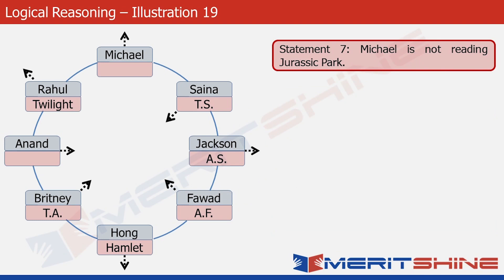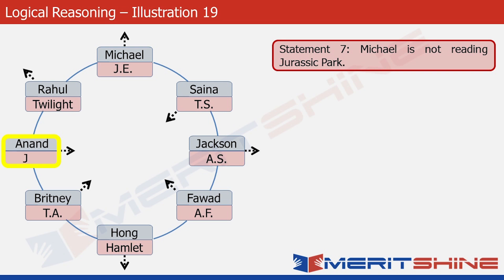Statement seven says that Michael is not reading Jurassic Park. Looking at Michael's position, the only remaining book for him is Jane Eyre, so let's write JE there. Now there is only one vacant cell left in the structure, occupied by Anand, and the only book remaining is Jurassic Park. So Anand is reading Jurassic Park — let's write JP there. With this we have completed the structure and solved the problem.